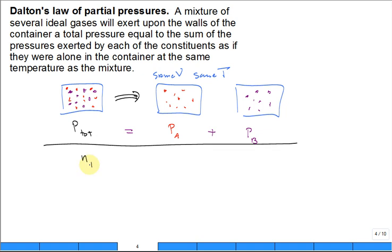If I had the total number of moles, that's equal to the number of moles of A plus the number of moles of B. That makes sense.